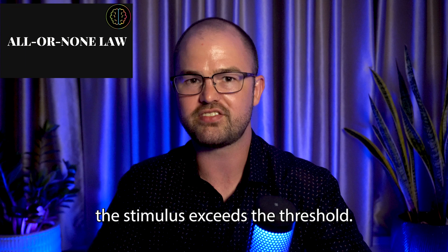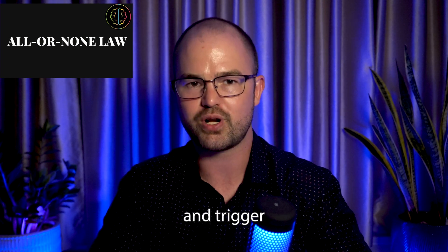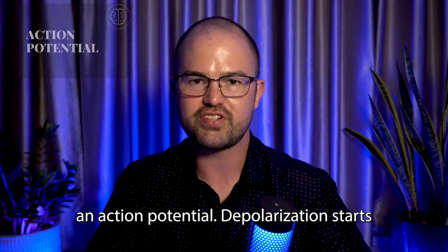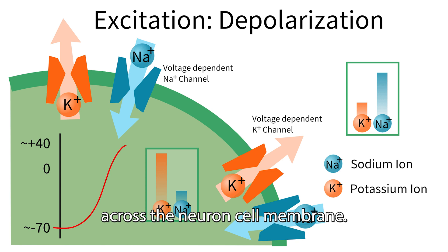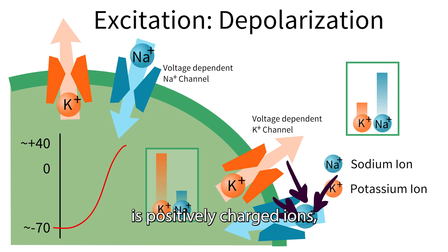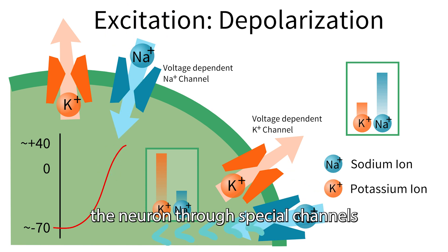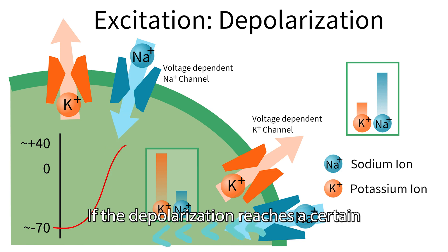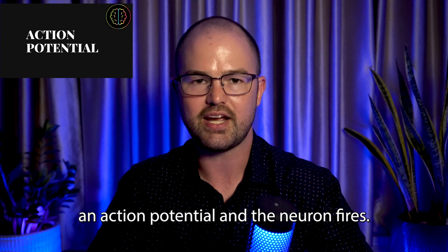So let's imagine the stimulus exceeds the threshold. Now the neuron is going to depolarize and trigger an action potential. Depolarization starts when there's a change in the electrical charge across the neuron's cell membrane. What happens is positively charged ions, such as sodium ions, will rapidly enter the neuron through special channels in the cell membrane. If the depolarization reaches a certain threshold, it triggers an action potential and the neuron fires.